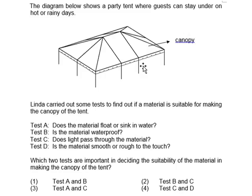Test B: is the material waterproof? Definitely this is important, because the reason why we have a tent is to protect the guests from rain, and for it to protect them from rain, it has to be waterproof. Test C: does light pass through the material? Again, the reason why we have a tent is to protect the guests from very strong sunlight. If the canopy allows light to pass through, then the people under the tent would be subjected to the hot afternoon sun — and that's not the reason why we have a party tent. We want to shield the guests from strong sunlight. So test C is important.